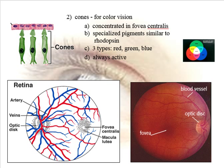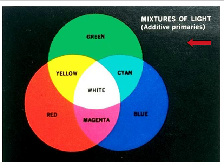The cones in the fovea are for red, green, and blue light. From those three types of cones, we make all the colors of the rainbow — which is pretty remarkable. Red, green, and blue make all the colors of the rainbow.